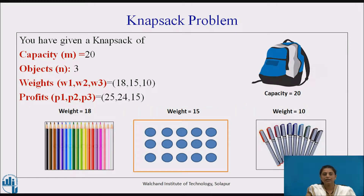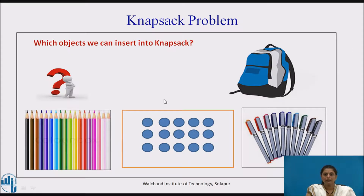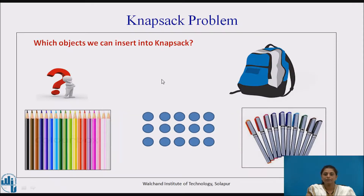Consider this example: you are given a knapsack of capacity 20, there are three objects. The weights are 18, 15, and 10. The profits are 25, 24, and 15. Now we will start putting the objects into the knapsack.